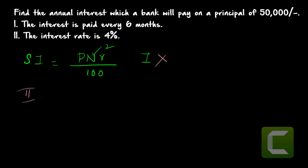In statement two, the interest rate is four percent. Using SI = P × N × R / 100, we have P = 50,000, N = 1 (annual interest is asked), and R = 4%. We have all three values, so we can easily find the simple interest. Therefore, statement two alone is sufficient to answer the question — the answer is option B.